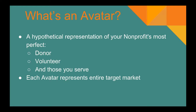By definition, an avatar is a hypothetical representation of your nonprofit's most perfect donor, most perfect volunteer, or most perfect representation of those you serve. For example, Wounded Warrior Homes — the nonprofit that helps homeless veterans struggling with PTSD get off the street — has great information that, with $10,000 a month behind it on Google, can reach more of the appropriate people. Each individual avatar represents an entire target market.